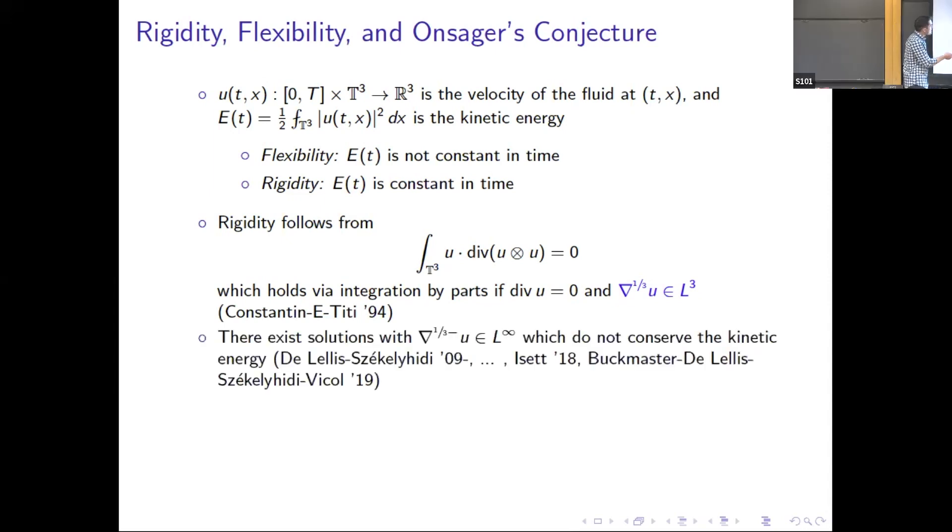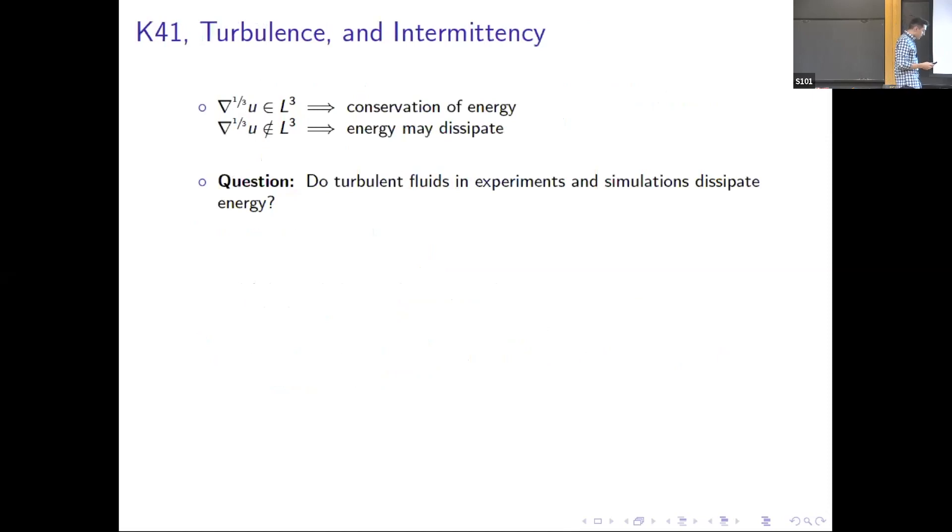This is the rigid side of this flexibility-rigidity problem. The flexibility side was resolved in the past several years building on ideas that Camillo and László introduced to the community. It says that one can produce solutions which have almost one-third of the derivative in L^∞ and which do not conserve the kinetic energy. This threshold of one-third of a derivative is the Onsager conjecture, conjectured by Onsager 70 years ago. I guess it's the Onsager theorem now perhaps.